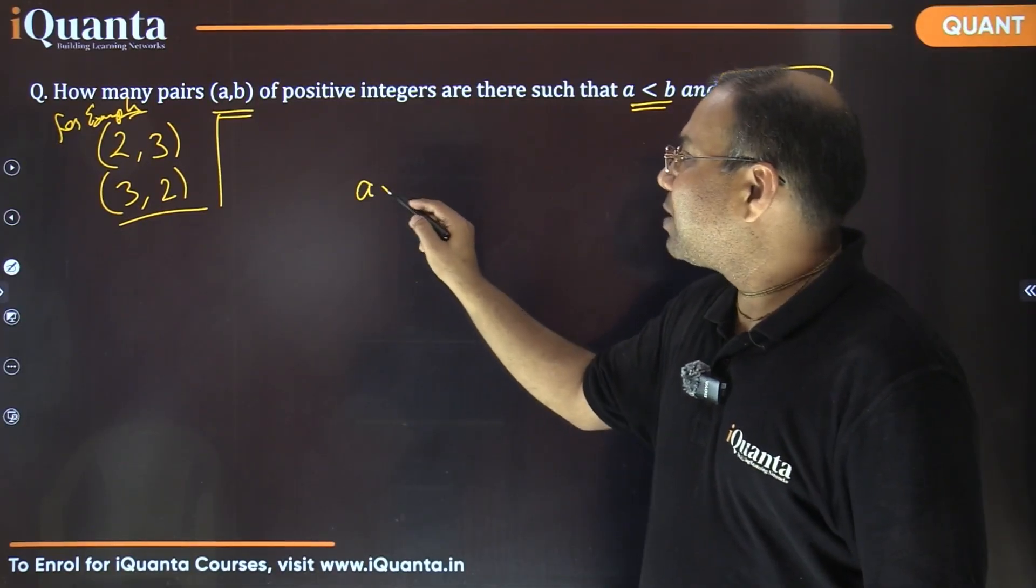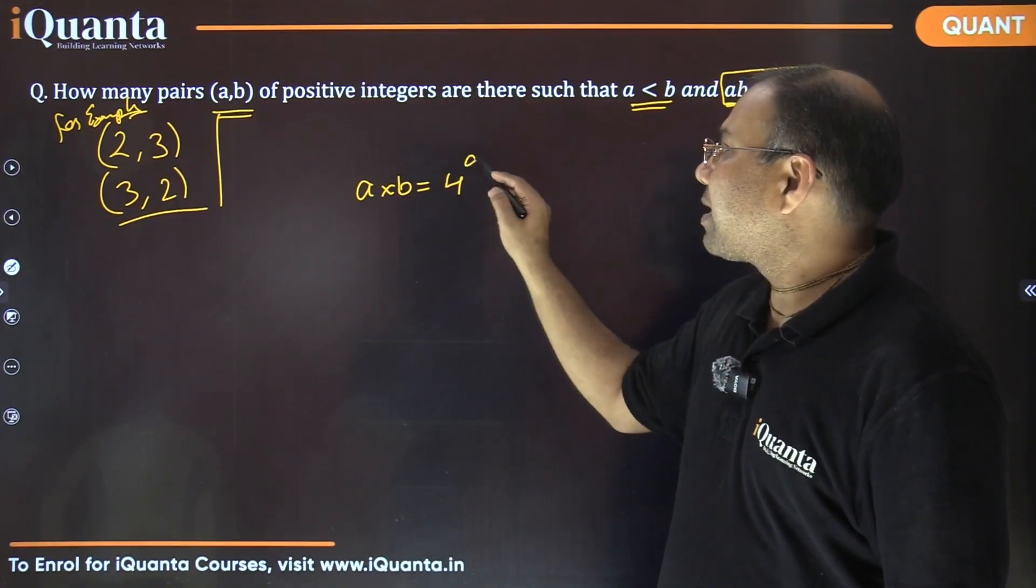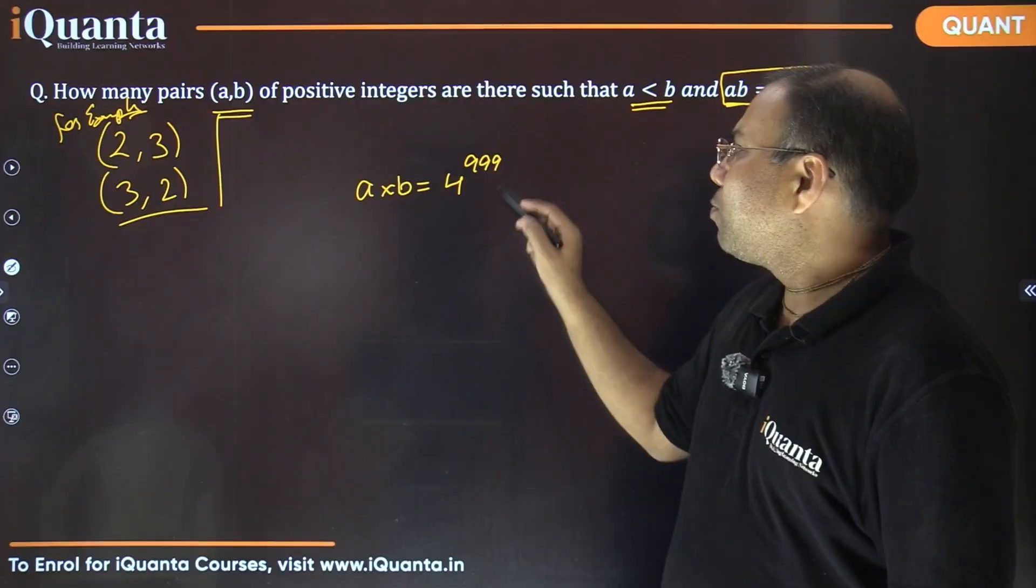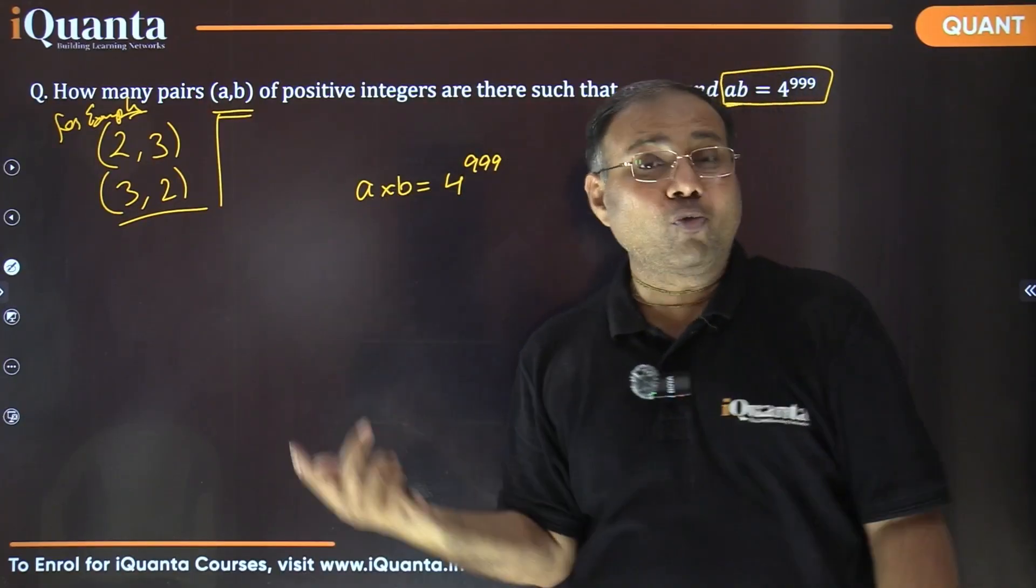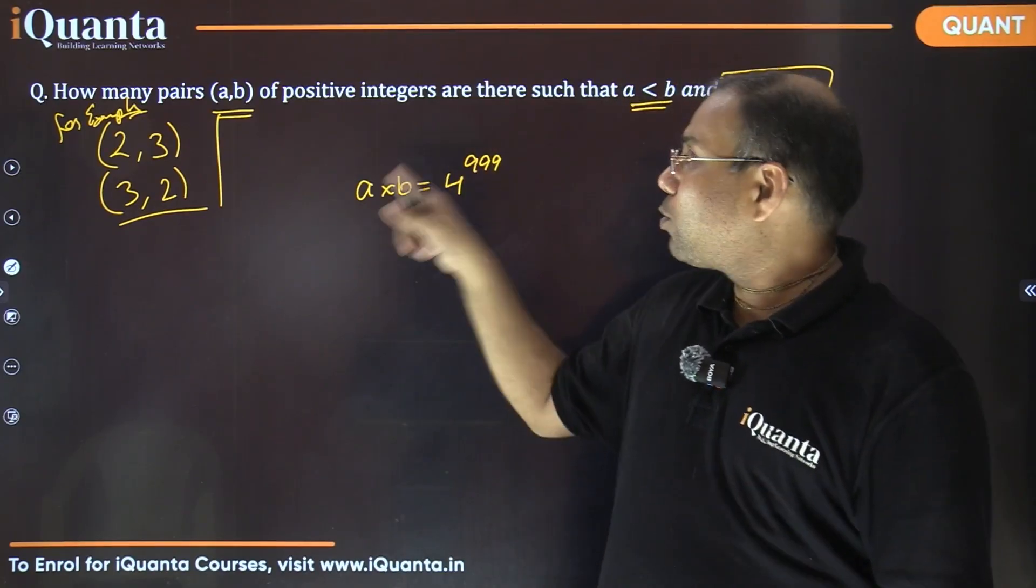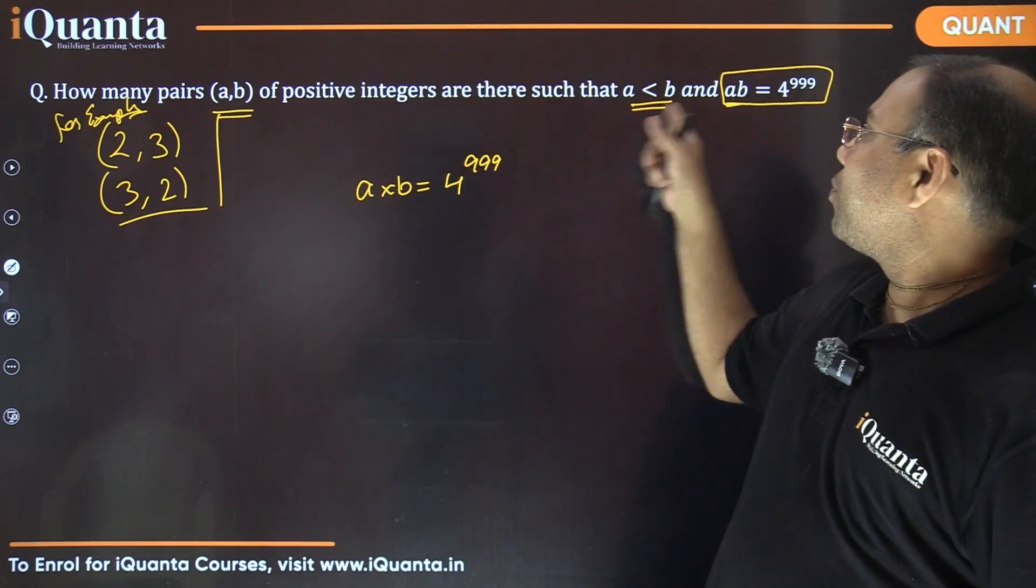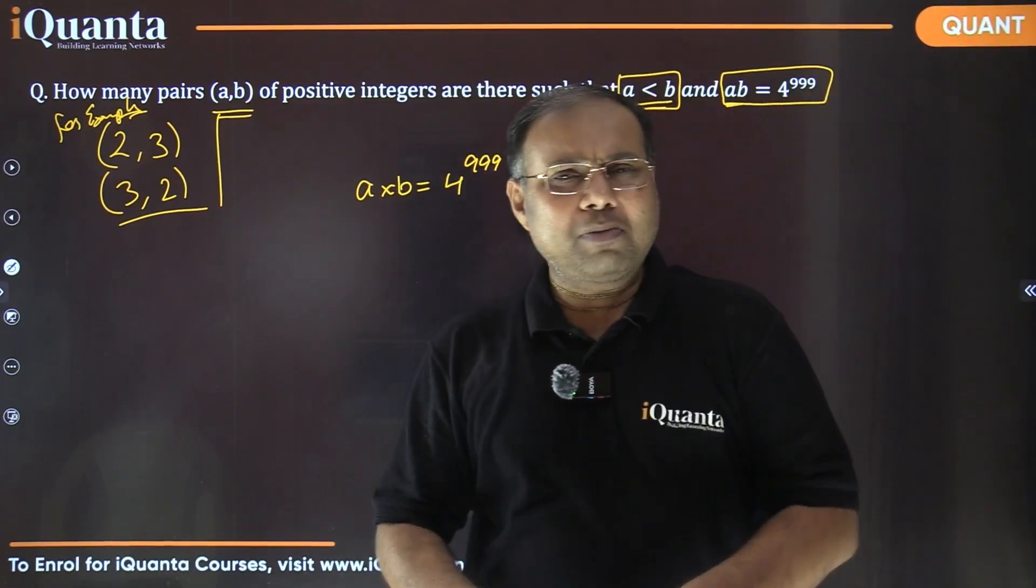So basically in that case, there is only one order now. So A is less than B and A into B, the product of A into B is 4 raised to the power 999. So that is the question now.